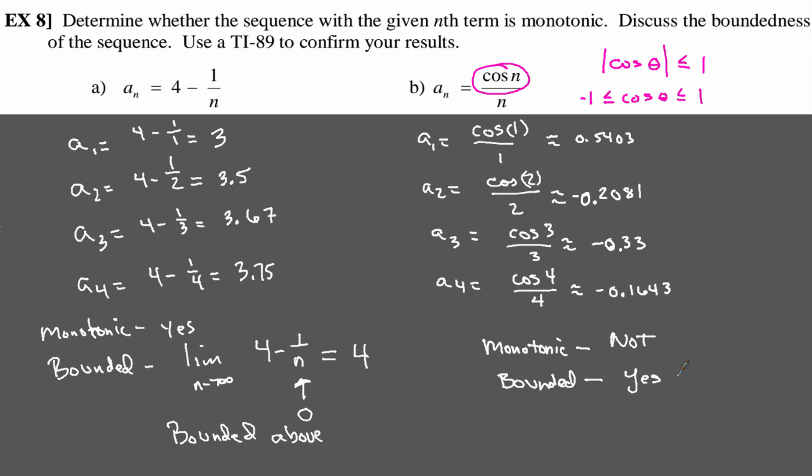All right, so that's two examples here for determining whether the given sequence is monotonic, and we've discussed the boundedness of these sequences. So let's go ahead and take a look at example 9.